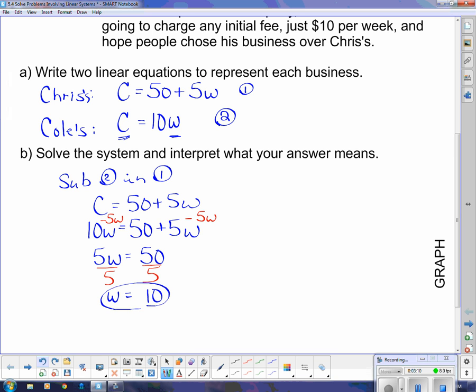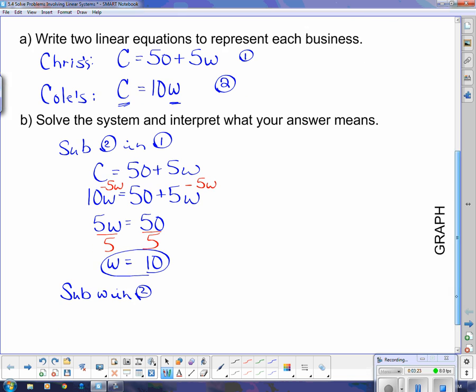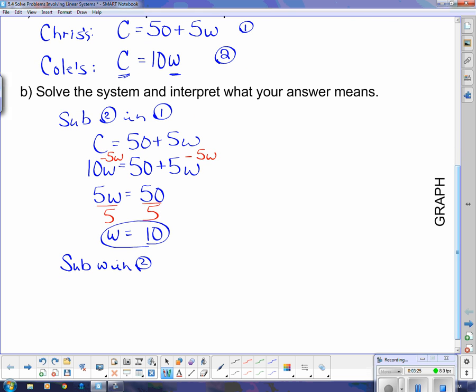And that tells me that W equals 10. Now that I know what W is, I'm going to sub that back into equation 2. It looks like the simplest equation. So we say sub W into 2, and so we get cost equals 10 times 10 or $100.